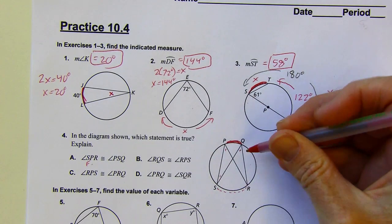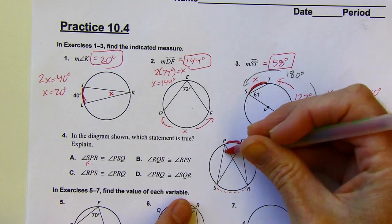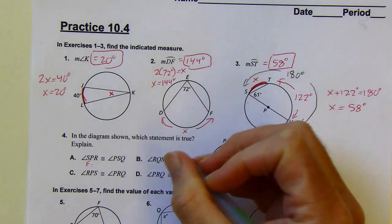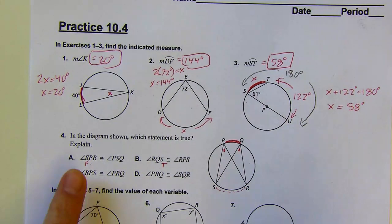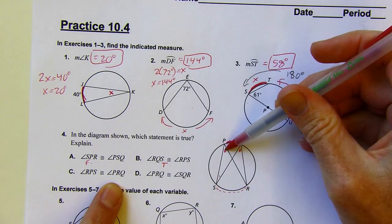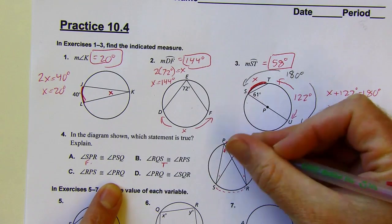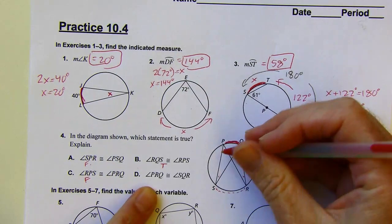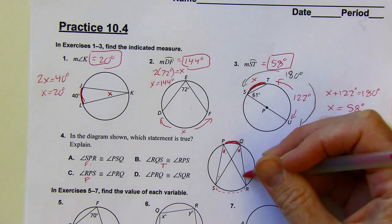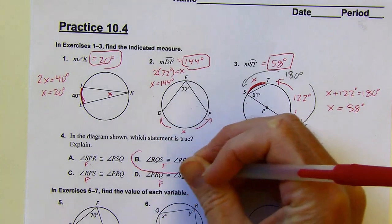And then we've got RQS and RPS. RQS is right up here, and RPS is this one. Those two, RQS and RPS, both intercept where I have the dashed line there. So that is definitely true. Let's check the other two. RPS and PRQ intercept different arcs. This one intercepts the dashed line, that one intercepts the solid line. And PRQ and SQR also intercept different arcs. The only one that works here is that one.